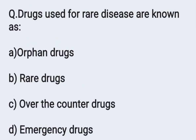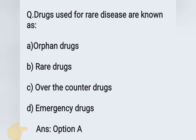Next question: A drug used for a rare disease is known as — option A: orphan drugs, option B: rare drugs, option C: over-the-counter drugs, option D: emergency drugs. The correct answer is option A, orphan drugs. These are drugs used for rare or uncommon diseases.